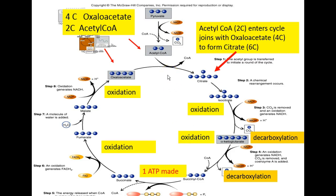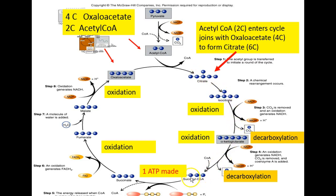The tricarboxylic acid cycle or Krebs cycle is a cyclical series of chemical reactions in which one of the reactants in the pathway joins with a reactant outside the pathway to form an intermediate. These intermediates undergo a series of changes that eventually produce the original reactant in the cycle.